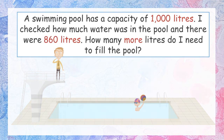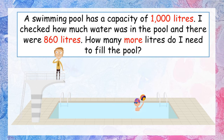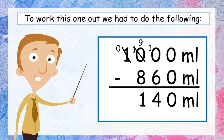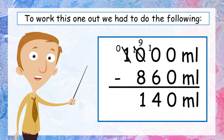Here are the important pieces of information: the pool should be at 1000 litres but it's only got 860 litres, so we need to figure out how many more litres. Let's change this into a sum: 1000 litres take away 860 litres already in there leaves us with 140 litres that we need to put in. Our answer is 140 litres. Give yourself a tick and let's move on to number three.